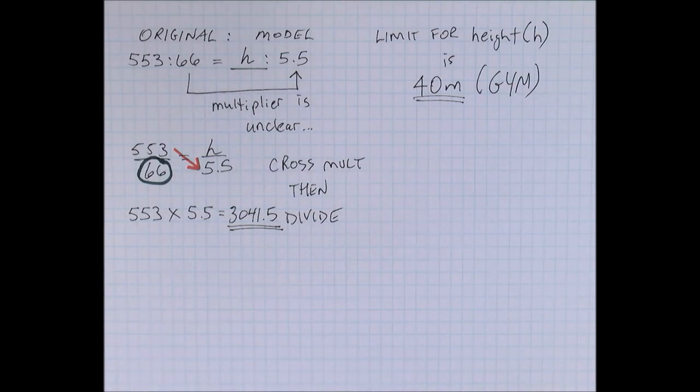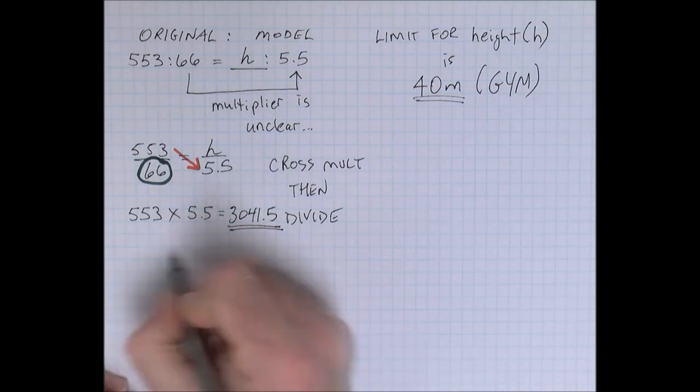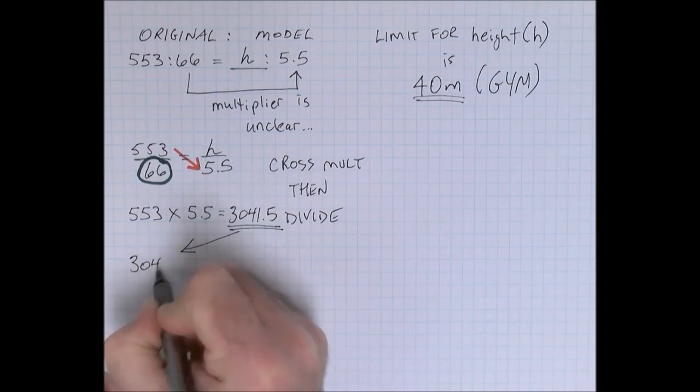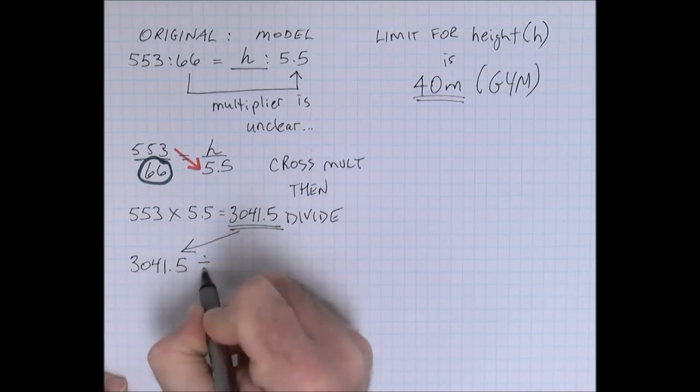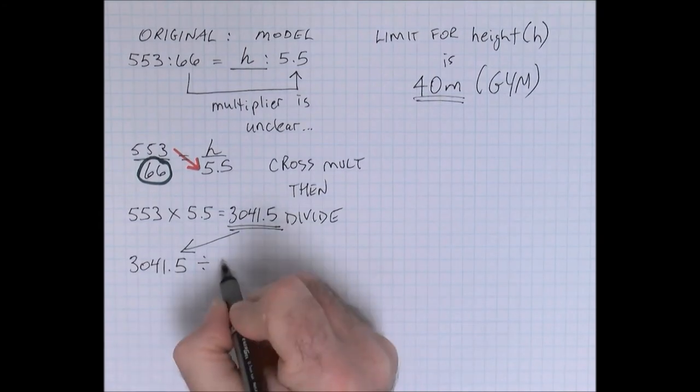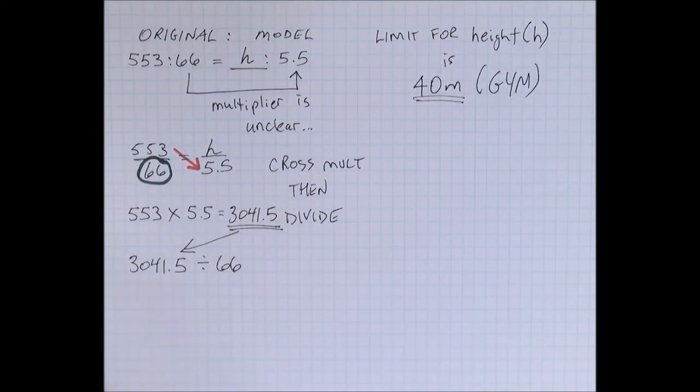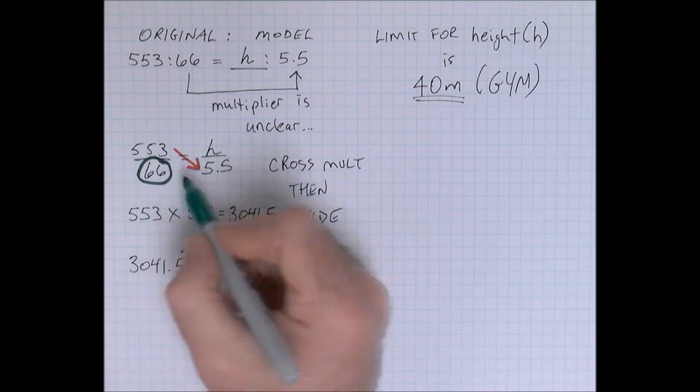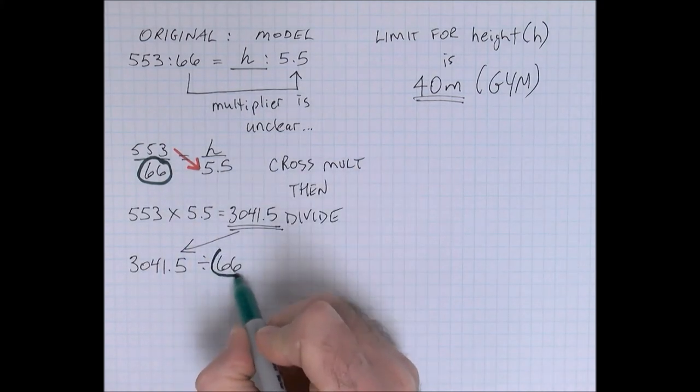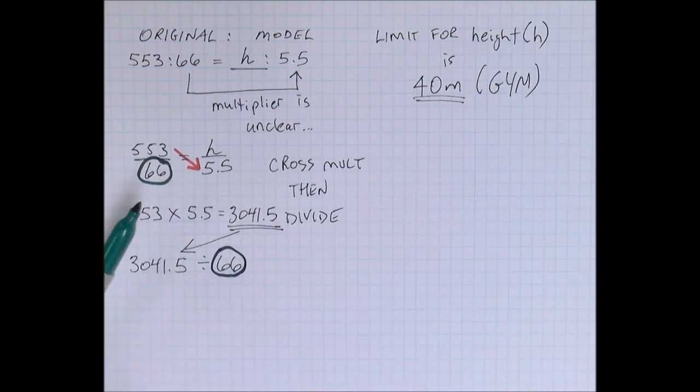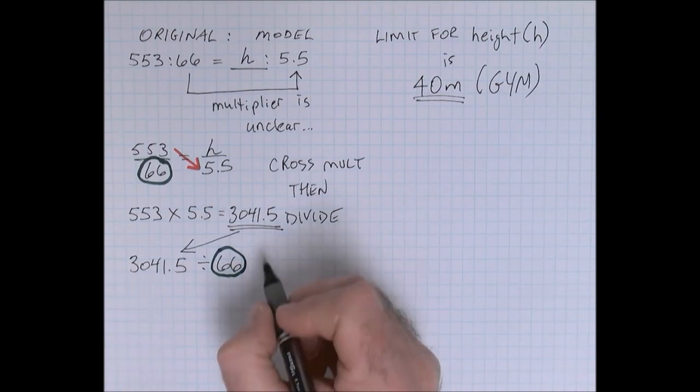Then take that number and divide by 66. So that's the number that we didn't use in the original proportion. So we're going to multiply two numbers across the equal sign, and then we're going to divide by the value we haven't used yet.